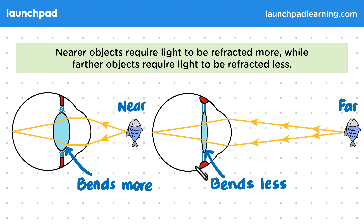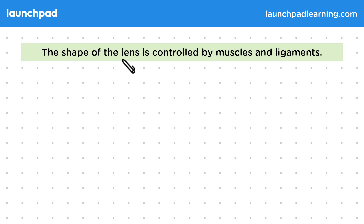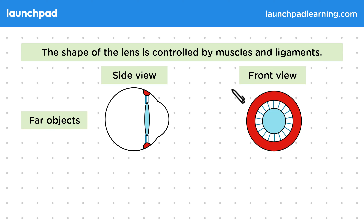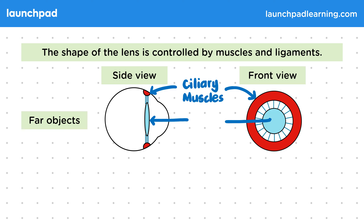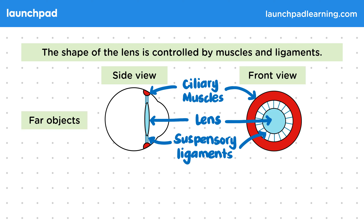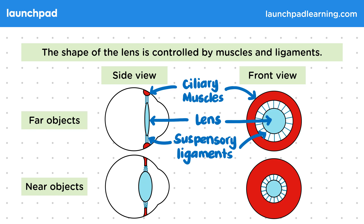So how is lens shape controlled to accommodate looking at further and nearer objects? The shape of the lens is controlled by muscles and ligaments. In these diagrams, the red colour represents the ciliary muscles, the blue in the middle is the lens, and the blue lines attached to the lens show the suspensory ligaments. When looking at far objects, the suspensory ligaments are tight and the ciliary muscles are relaxed, giving a thin lens. When looking at near objects, the suspensory ligaments are loose and the ciliary muscles are contracted, giving a thicker lens.